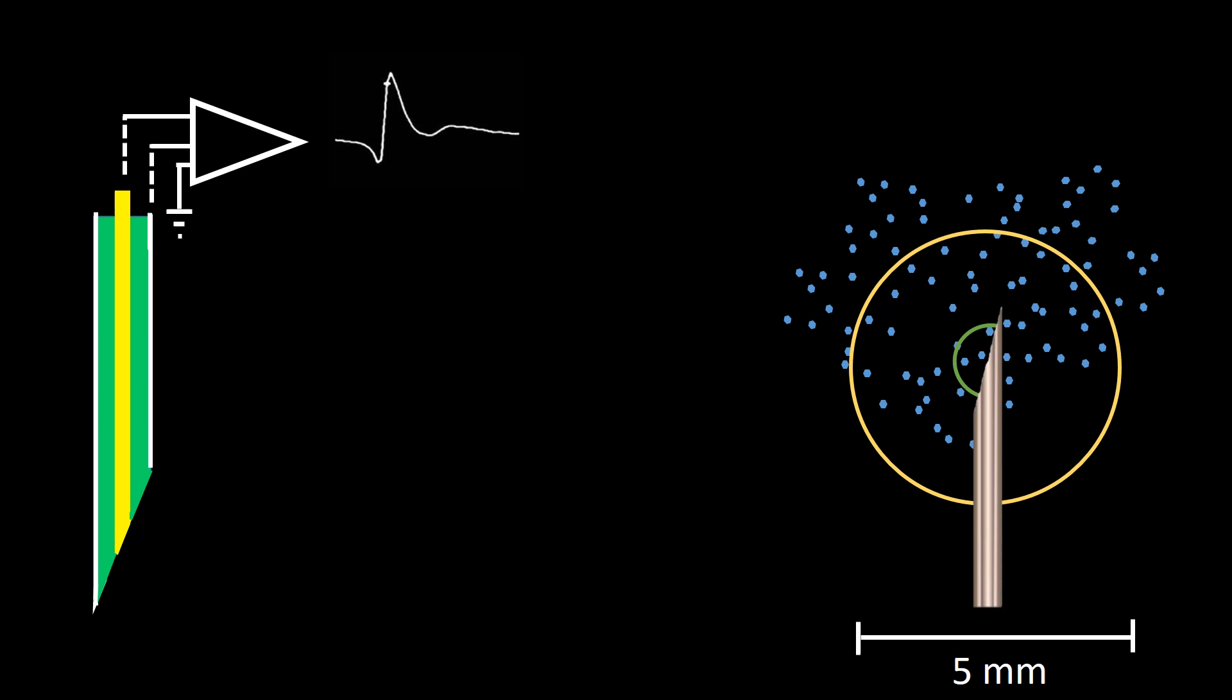Hence, concentric needle EMG failed to capture the totality of the muscle fibers innervated by a single lower motor neuron.